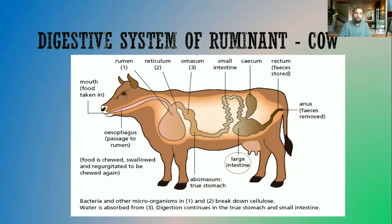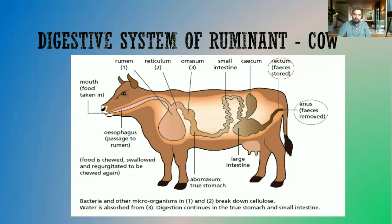In the large intestine, water is mainly absorbed into the blood vessels surrounding it. Then we have the rectum, where the undigested food is temporarily stored until it is removed by the anus.